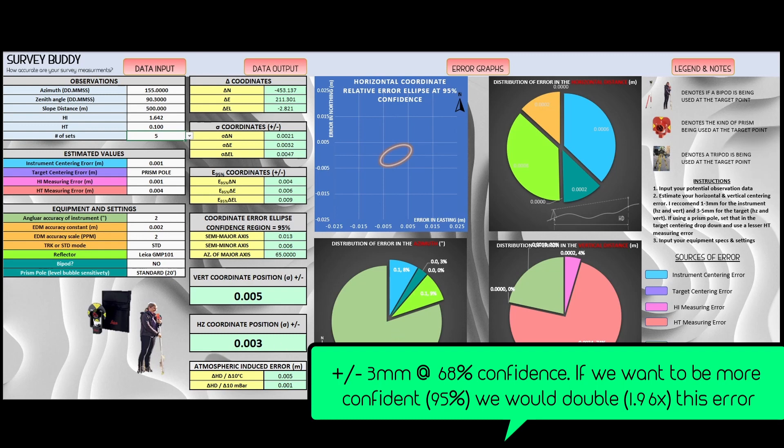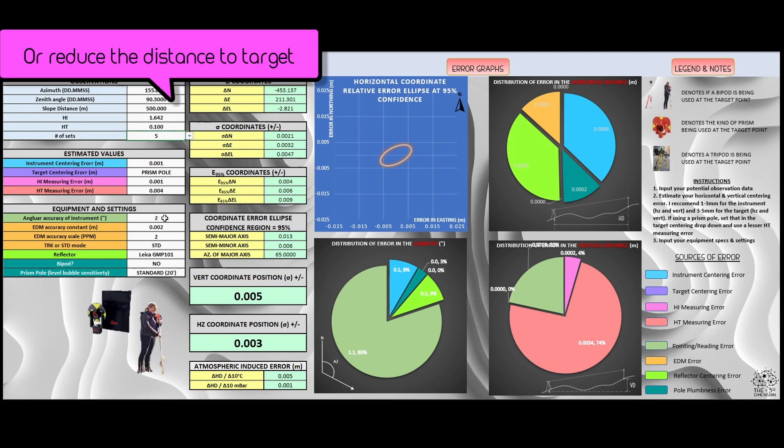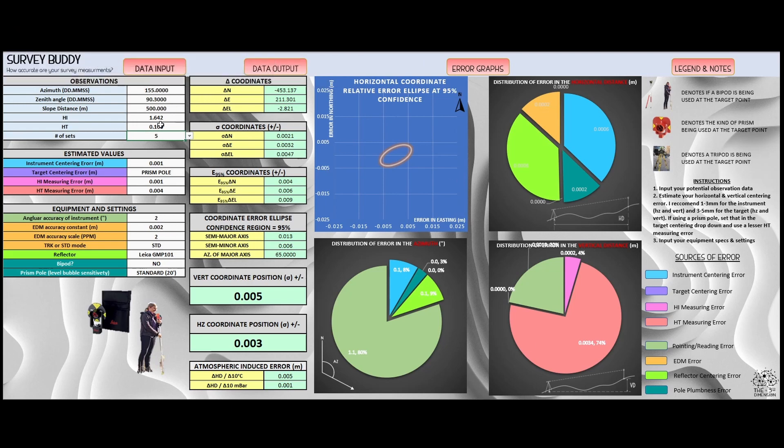Basically the vast majority of error now is being made up from our pointing and reading error. But we're kind of maxed out where we only have a two second gun and we're already taking five sets of observations. That's the best we can do in this situation until we can upgrade our equipment. So that's just a quick example of how you can use SurveyBuddy to figure out if you need to change your field procedures or if you need to change your equipment or a combination of the two to meet a specified precision.